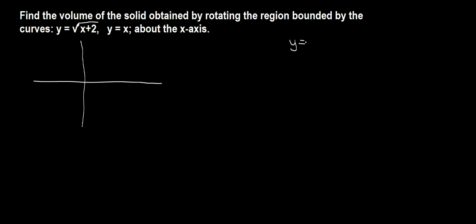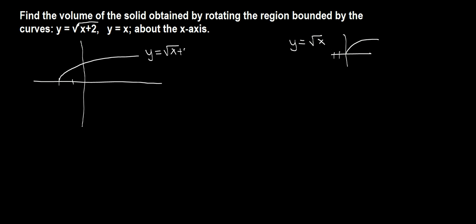We know the graph of y equals root x. Now x plus 2 inside the root means we need to shift this graph two units to the left. So y equals root x plus 2, and the other curve is y equals x, the identity function.